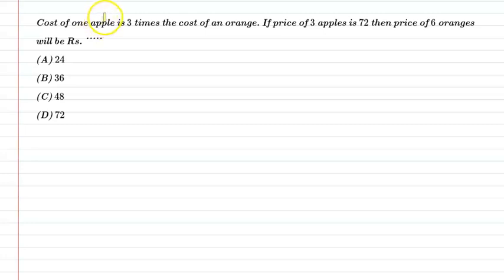Hello students, let us understand the following question. The question says: cost of one apple is three times the cost of an orange. If price of three apples is 72, then price of six oranges will be - we need to find the cost of 6 oranges.